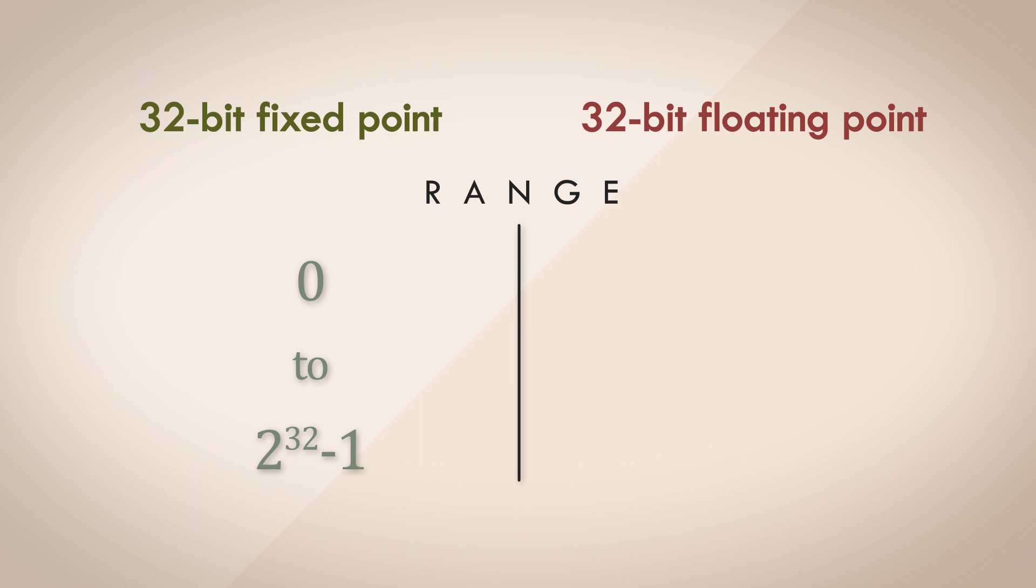What about 32-bit floating point format? We can store numbers from around 2 times 2 to the power of 127 to negative 2 times 2 to the power of 127. That's a monumental range, way bigger than what 32 bits can store. How is this possible?